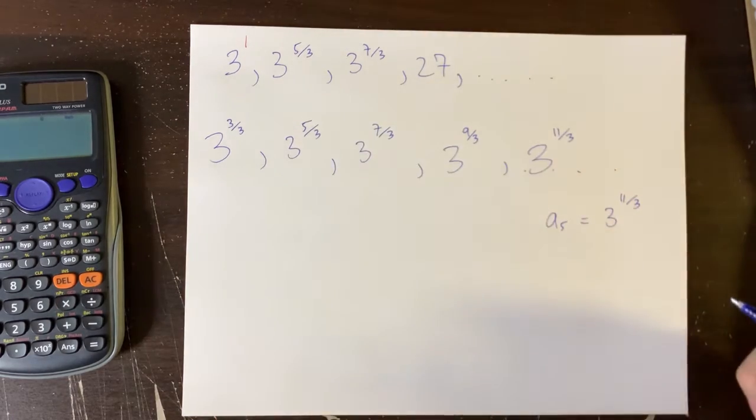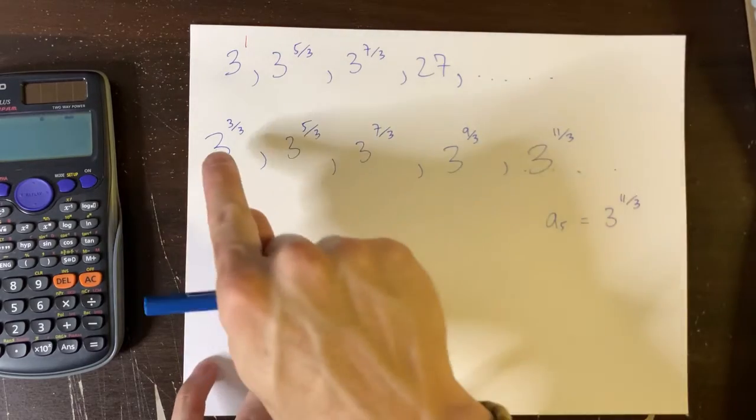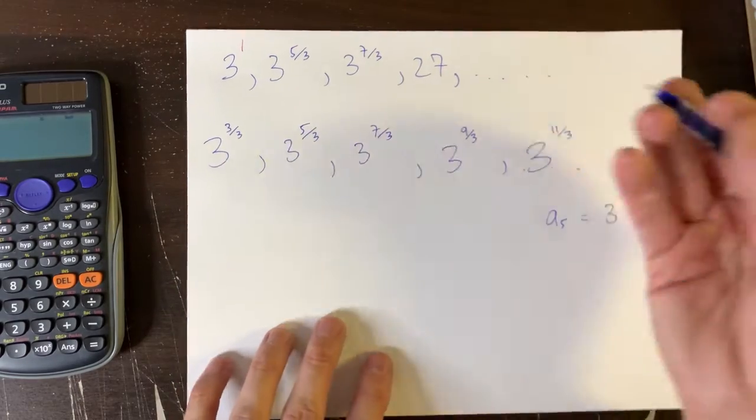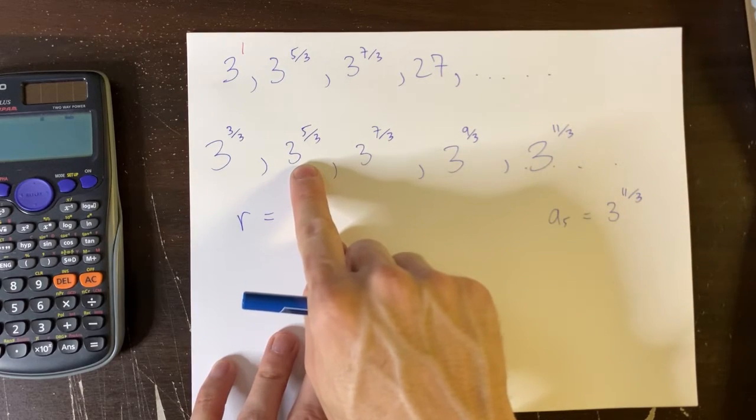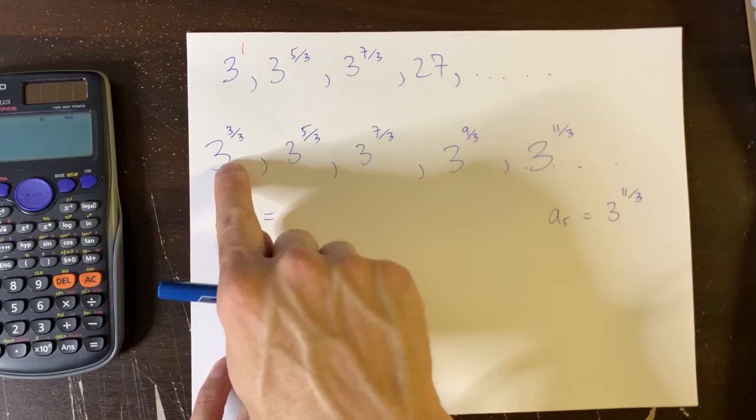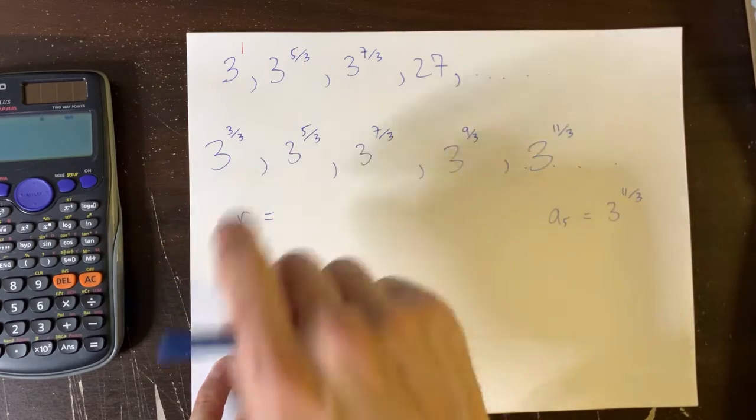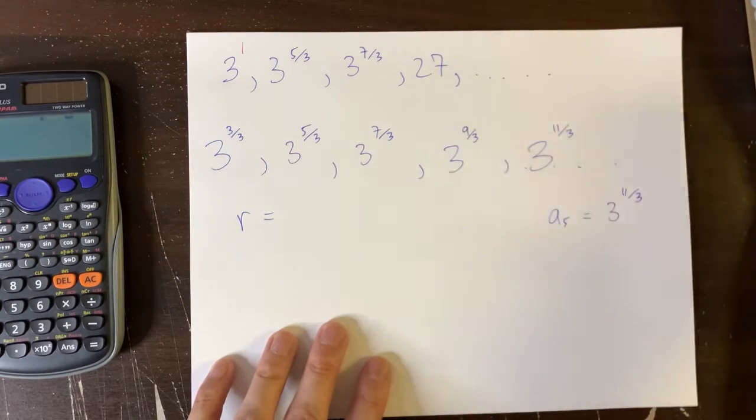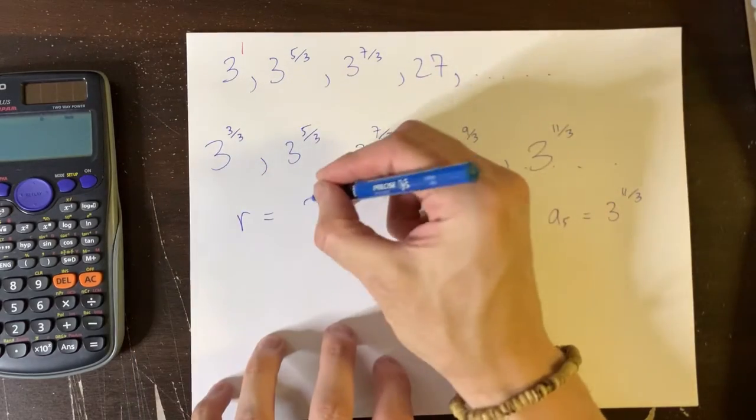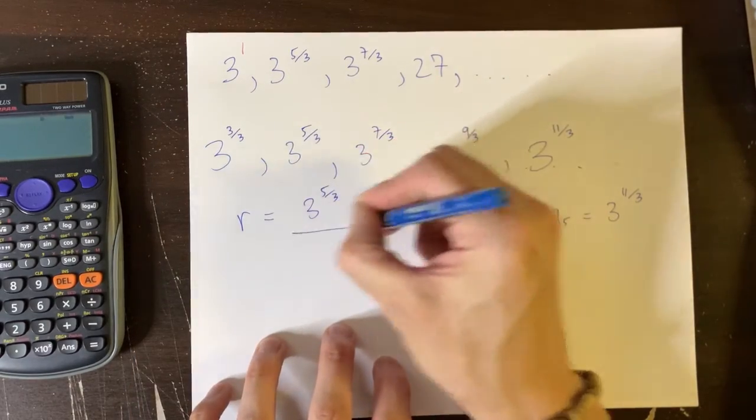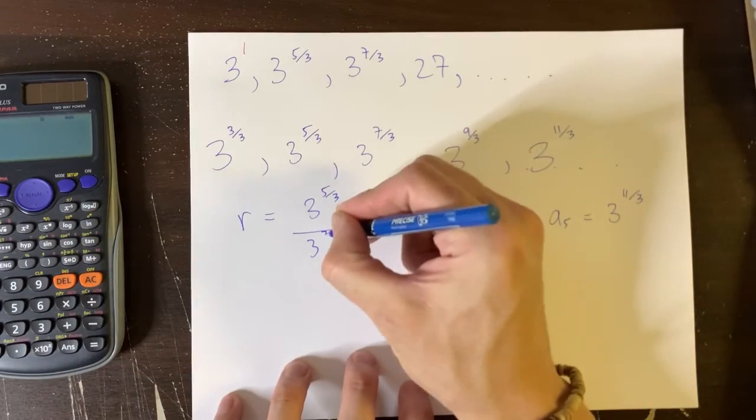Now, what's the common ratio? I mean, to go from here to here, what am I multiplying by? Well, to do that, recall that the common ratio can be found by taking any term and dividing it by its predecessor. You can go this divided by that, or this divided by that, or any two consecutive terms. So let's take this one here, and let's divide it by the term before.